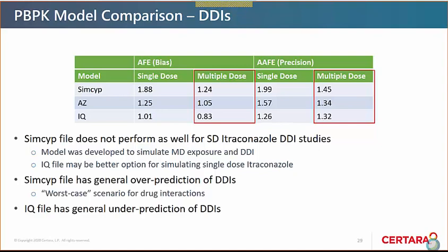A question from Tammy in the chat: how will PGP inhibition be incorporated into the model — using clinical DDI data or in vitro data? Peter's response: it's going to be a mixture of both. We'll look at in vitro data that's available. There's been some work already done on scaling in vitro PGP-based data to capture clinical DDI data, and some posters previously on incorporating PGP for other compounds. So it will be a mixture of using that published knowledge and scaling strategy to incorporate it for itraconazole.